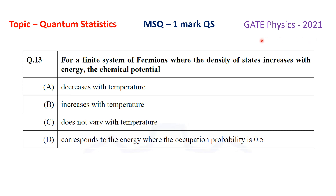This question is from the GATE Physics paper 2021 and is a one-mark multiple select type question asked from the topic quantum statistics. The question is: for a finite system of fermions where the density of states increases with energy, the chemical potential — option A: decreases with temperature; option B: increases with temperature; option C: doesn't vary with temperature; option D: corresponds to the energy where the occupation probability is 0.5. Since this is a multiple select type question, multiple options may be correct.